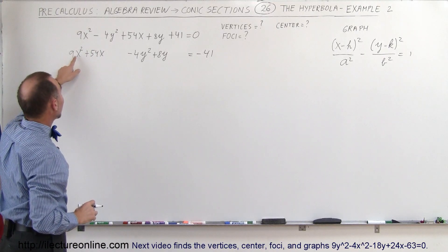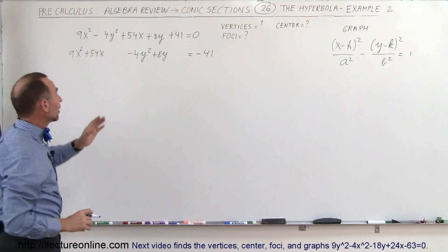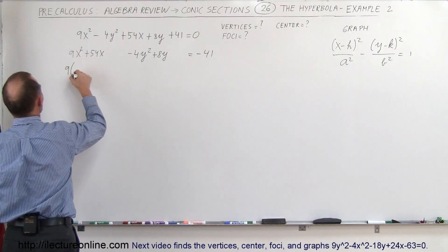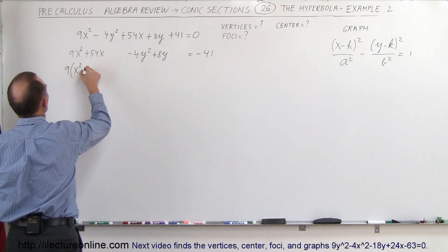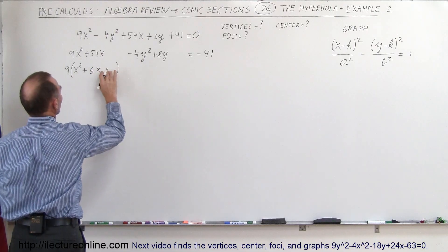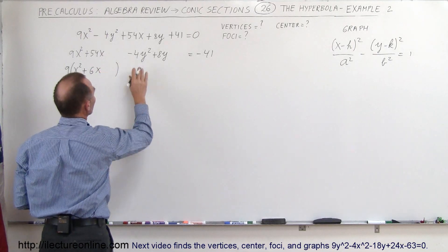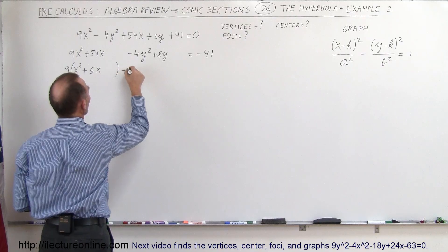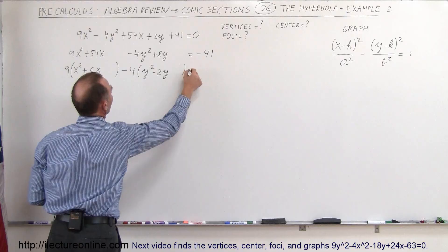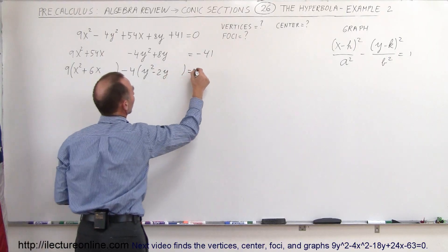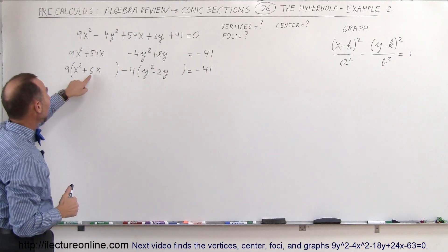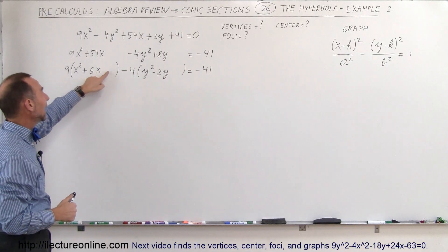First, we want a 1x-squared term instead of a 9x-squared term, so we factor out a 9. That gives us 9 times (x squared plus 6x). Then we factor out a minus 4 from the y terms, giving us minus 4 times (y squared minus 2y), leaving space for the third term. Now we're ready to complete the squares.